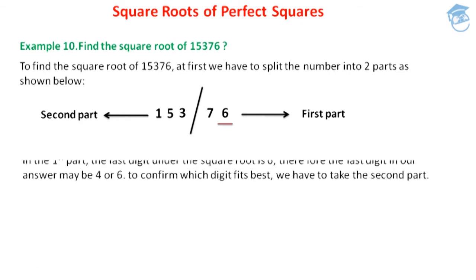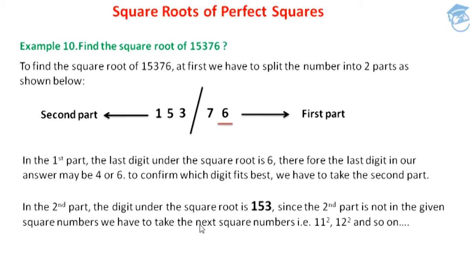As I have told in our earlier session, if we get the last digit as 6 in the square root, the last digit we are going to get in our answer may be 4 or 6. But in order to confirm which of these two digits fits best, we have to take the second part, that is 153, and check between which square numbers the number 153 lies.